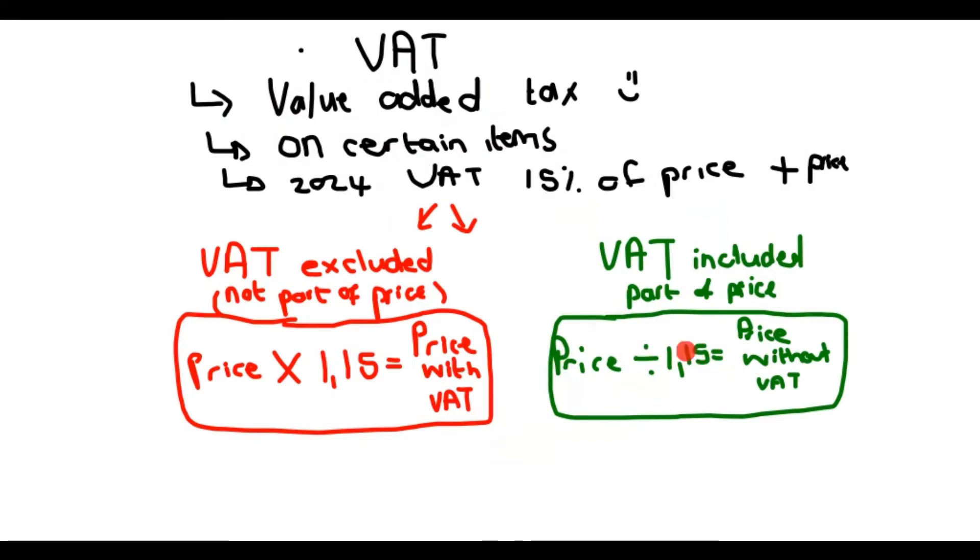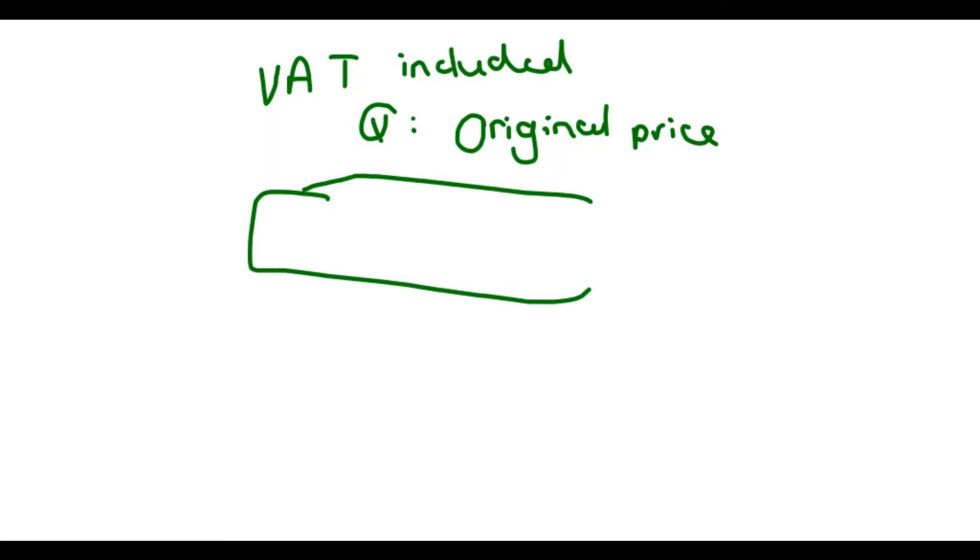Let's go back. What about the price divided by 1.15? I obviously did the opposite here. If you really want to know, VAT is included, and the question here would be determine the original price. We actually have a formula for that: original price is 100 over 100 plus the percentage specified in your question times your price.